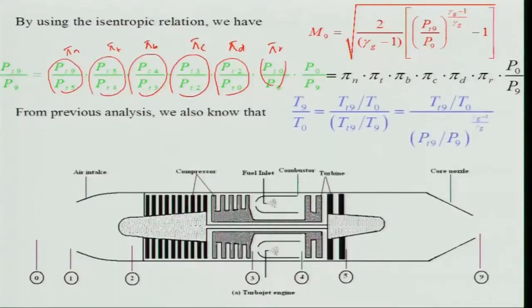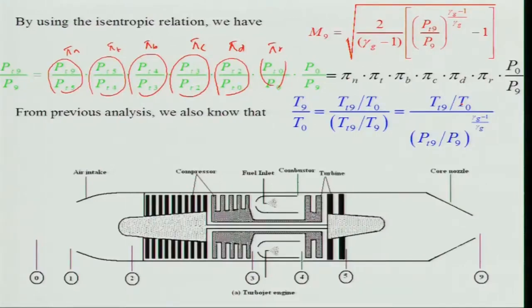From the previous analysis, T_9/T_0 = (T_t9/T_9) in numerator and denominator. T_t9/T_9 can be written as (P_t9/P_9)^((γ_g−1)/γ_g), and T_t9 must be evaluated. We express T_t9/T_0 as a product of temperature ratios across each component, using the same station-by-station approach we used for pressure.